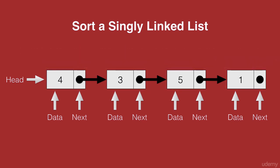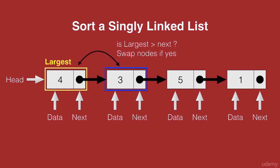We start from the head node and mark that first node as the largest node. Next, we check if this node is greater than our next node. Using next of 4, we move to the next node which has the data 3. On comparing 4 and 3, we see that 4 is greater than 3. Now if our largest node is greater than the next node, then we swap both the nodes.